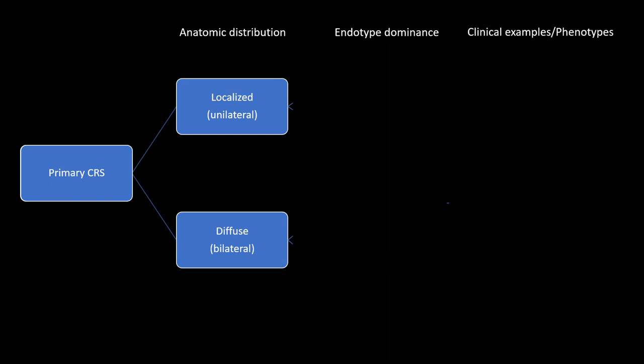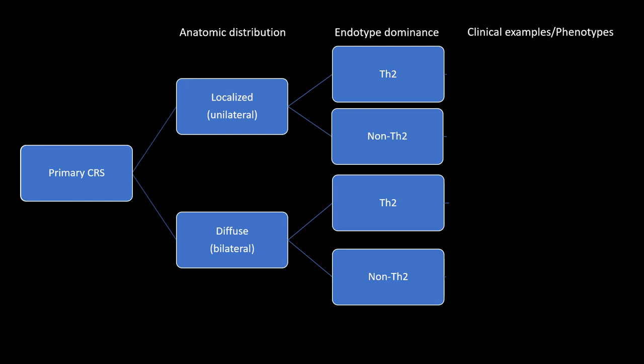Let's talk about endotype dominance. Endotype dominance is important because the treatments available — from current local treatments through to biologics — are really separated into Th2-type disease treating agents and non-Th2. We understand a lot about Th2 disease. Although we know non-Th2 comprises several entities, we don't yet know enough to break it out, nor do we have treatments that allow us to do so. For now, it's listed as non-Th2, and in the future this may expand, but it's a sensible distinction right now.